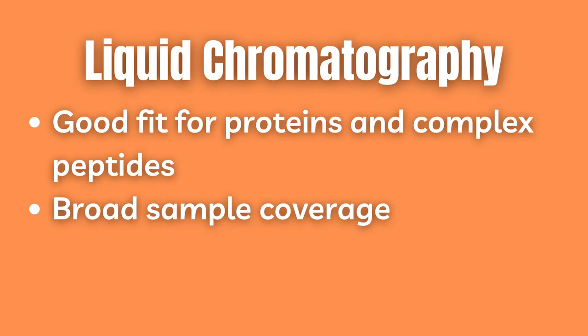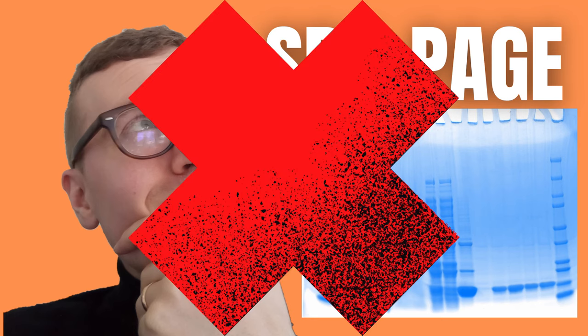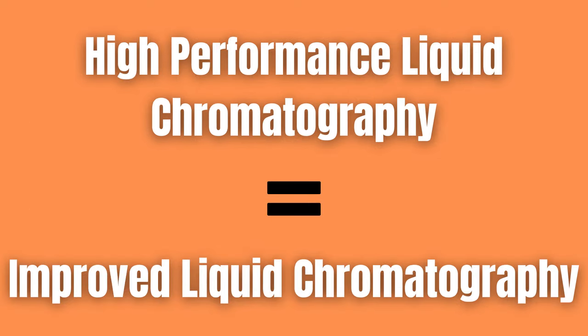Liquid chromatography is a good separation technique especially for larger and non-volatile molecules such as proteins and complex peptides. Combining this with mass spectrometry is especially useful since we can use different types of column chemistries for broad sample coverage. Liquid chromatography is in fact so efficient that it has largely replaced gel electrophoresis for molecular separation. LC is also especially well suited for pairing with MS since it reduces ion suppression, which in turn would impede complete ionization needed for MS to be successful. An improved version of LC called high-performance liquid chromatography also exists and has largely replaced regular liquid chromatography.